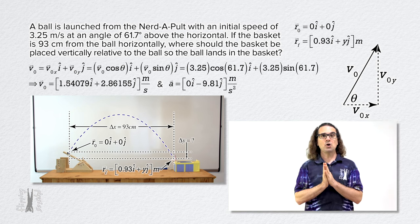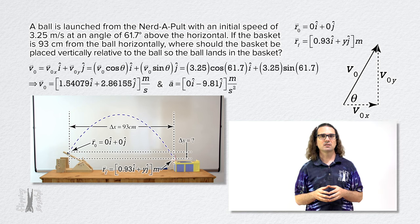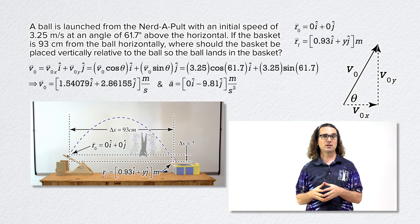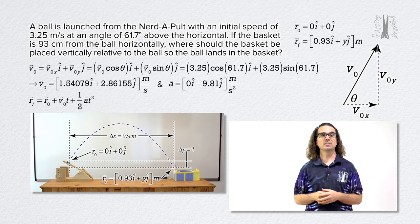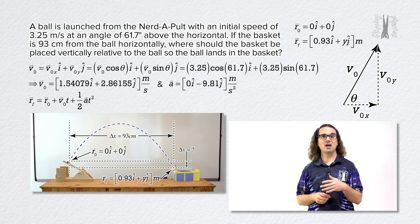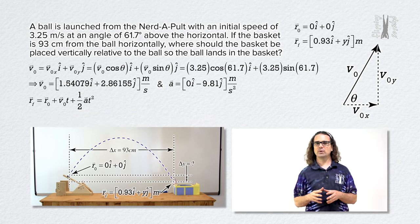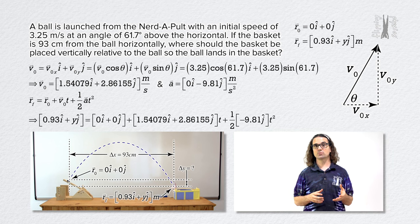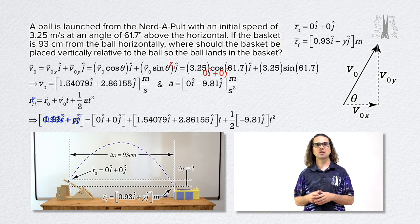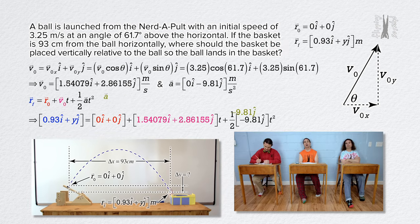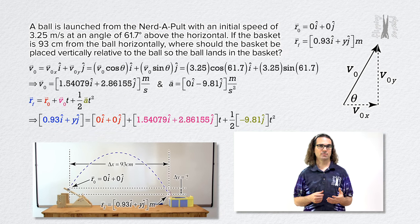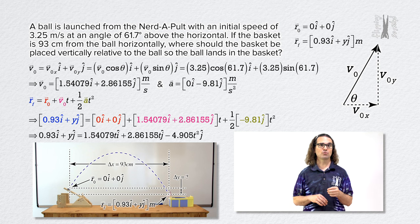Now, we know the acceleration of the ball is constant, so we can use the uniformly accelerated motion equations. Let's use position final equals position initial plus initial velocity times time plus one half acceleration times time squared. Notice we can substitute the unit vector versions we just determined of final position, initial position, initial velocity, and acceleration. And we can remove the zeros and multiply through by time and time squared.